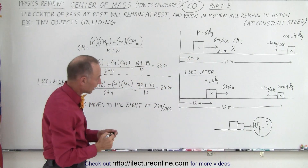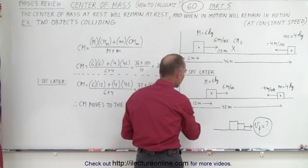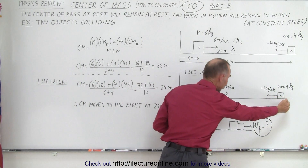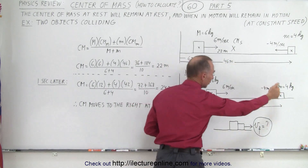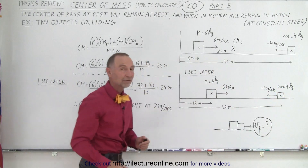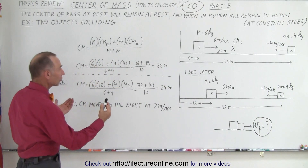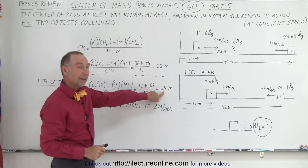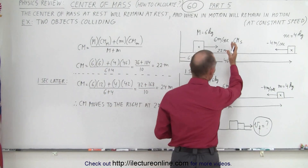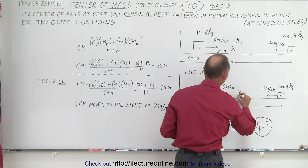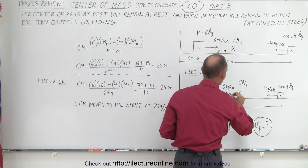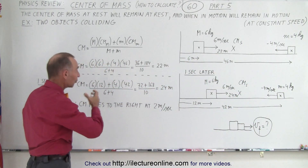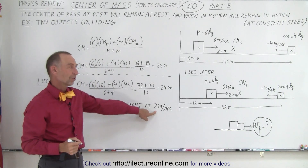Now we look at it one second later. The big mass has moved to a distance of 12 m, since it's moving at 6 m/s. The small mass is now at 42 m instead of 46 m, because it's moving to the left at 4 m/s. We calculate the center of mass for one second later using the same principle, and we find that the center of mass is now at 24 m — it has moved from 22 m to 24 m, so the center of mass is moving to the right at 2 m/s.